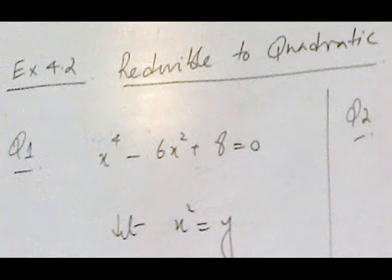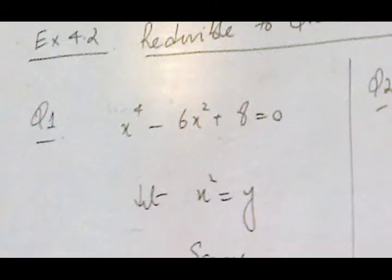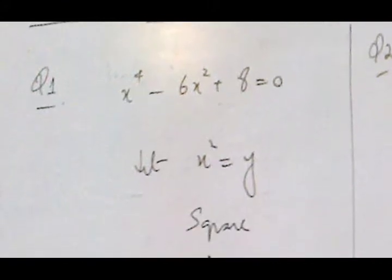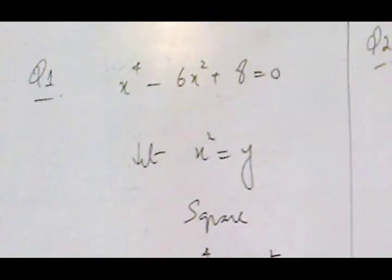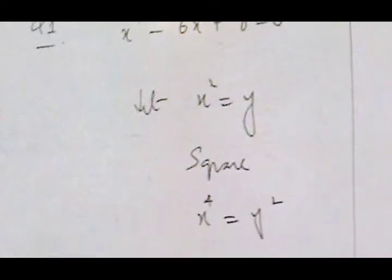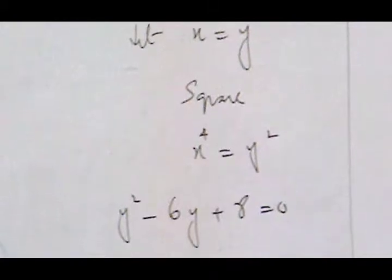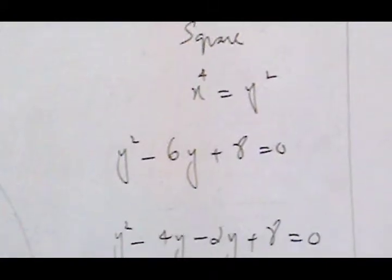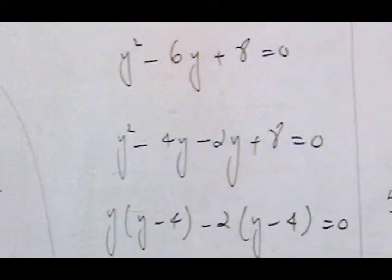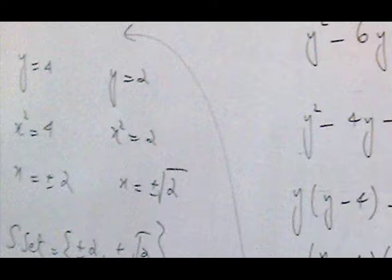Assalamualaikum students. Today we start Exercise 4.2 - Reducible to Quadratic. In the first question we have a degree 4 equation. First we reduce it to quadratic form: we let x² equal to y, so x⁴ becomes y². The equation becomes y² minus 6y plus 8. When we factorize, factors of 8 are minus 4 and minus 2, and their sum is minus 6.